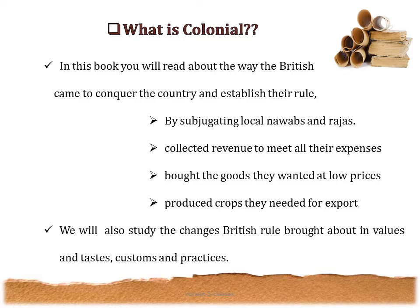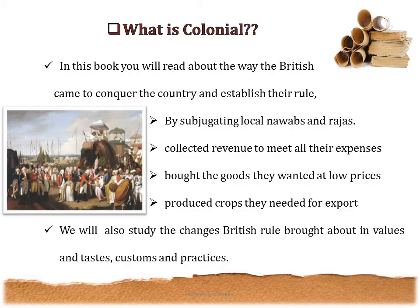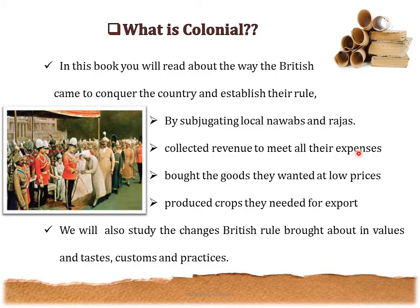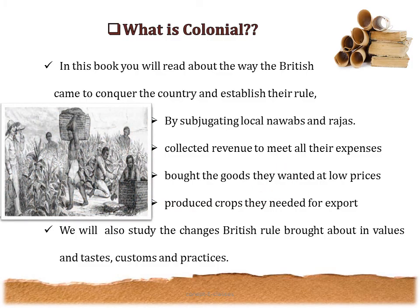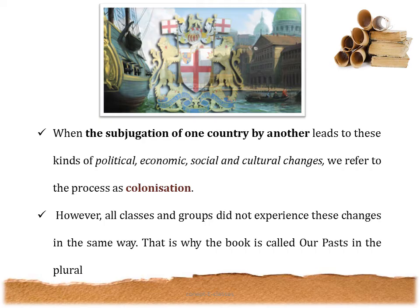Let's see what is colonial. As this chapter is an introduction for the rest of the book, we will read about the way the British conquered the country. First, they subjugated the local Nawabs and Rajas; then they collected revenue to meet their expenses. The British brought goods they wanted at lower prices and produced crops they needed for export. We will also study the changes British rule brought about in values, taste, customs, and practices. When the subjugation of one country by another leads to political, economic, social, and cultural changes, we refer to the process as colonization. However, not all classes and groups experienced these changes in the same way — that is why this book is called Our Past in the plural.